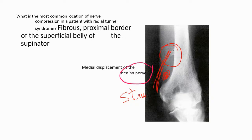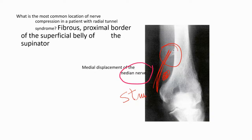Another compression problem at the elbow is radial tunnel syndrome, also called posterior interosseous nerve entrapment. The proximal fibrous border of the superficial belly of the supinator muscle compresses the posterior interosseous nerve — this is called the Arcade of Frohse.